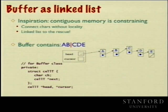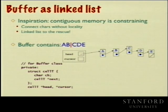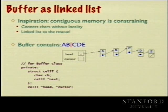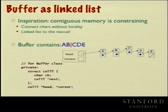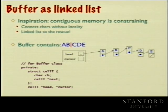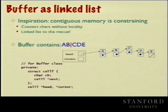Rather than using an index — which was handy in the vector case with direct access — given the way the linked list works, knowing it's at the fifth or fourth cell isn't very helpful. It will be more helpful to have a pointer directly into the midst of things to give us direct access to where the cursor is.